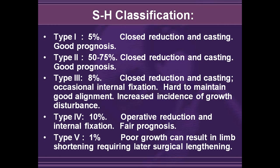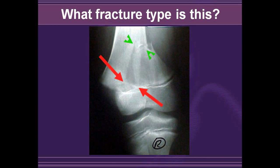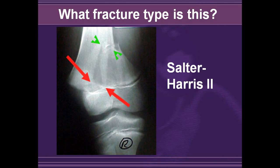Type 1 fractures are fairly uncommon, require closed reduction and casting, and have a good prognosis. Type 2, through the metaphysis, are the most common and also have a good prognosis with closed reduction and casting. Type 3, through the epiphysis, is not very common, occasionally requires internal fixation, and has increased incidence of growth disturbance. Type 4, including both metaphysis and epiphysis, has a fair prognosis and often requires operative reduction. Type 5, the crush injury type, has a poor prognosis and is often associated with poor growth and limb shortening because the growing cells become crushed and damaged. This example shows a fracture through the metaphysis with nothing through the epiphysis — a type 2 Salter-Harris fracture.